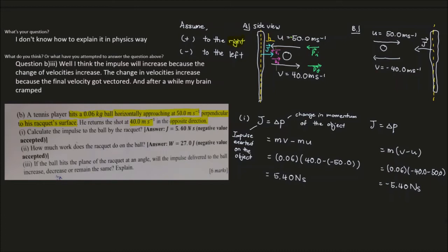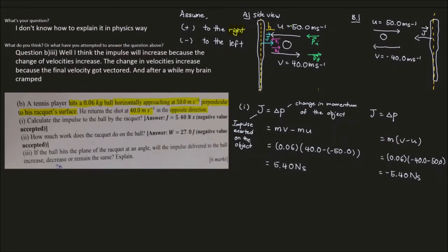We can convert speed to kinetic energy and use the work-energy theorem to relate it to total work done. The formula is: total work done equals the change in kinetic energy of the ball. The ball receives work done by the racket, and because work is done on the ball, the ball experiences a change in kinetic energy. This is always total work done — not change in mechanical energy or potential energy.